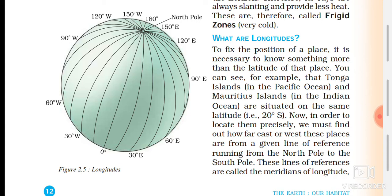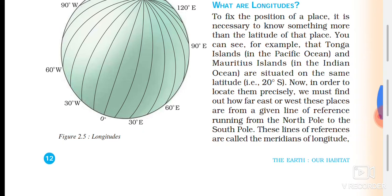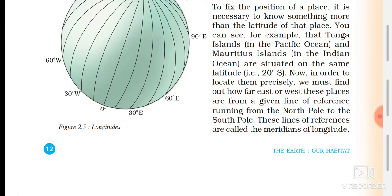For example, Tonga Island and Mauritius Island in the Indian Ocean are situated on the same latitude. In order to locate them precisely, we must find out how far east or west these places are from a given line of reference running from the north pole to the south pole. These lines of reference are called meridians of longitude.